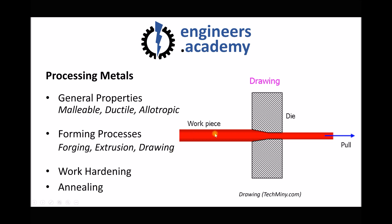To summarize: when we carry out various forming processes such as forging, extrusion and drawing, we often get work hardening as a direct result of the plastic deformation occurring within the die. However, work hardening can be overcome using the heat treatment process of annealing, which we're going to look at in greater detail in the next video.